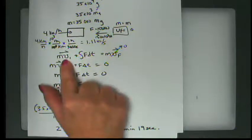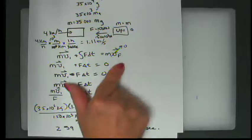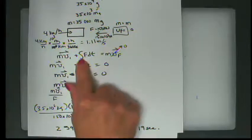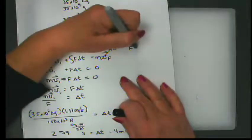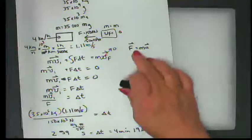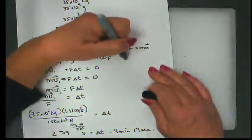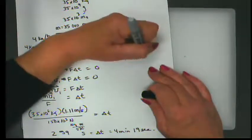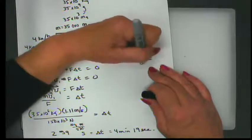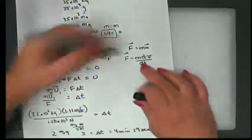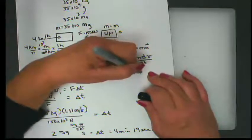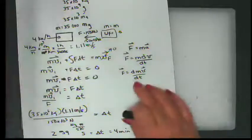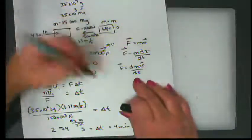A student asks: when you have that equation mv₁ plus the integral of F dt, where does it come from? Everything goes back to Newton's second law. Force equals mass times dv/dt. When we talk about momentum, even though mass is constant here, we can write it as F = d(mv)/dt and separate variables.